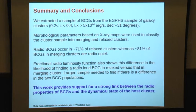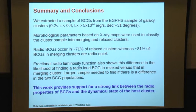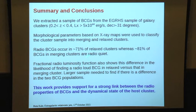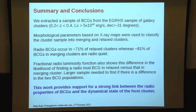To summarize: we extracted a sample of BCGs from the Extended GMRT Radio Halo cluster sample and used morphological parameters on X-ray maps to classify clusters into merging and relaxed. Radio-loud BCGs occur in 75% of relaxed clusters, whereas more than 80% of BCGs in merging clusters are radio quiet. We also constructed the radio luminosity function. The key message is that there is a strong link between the radio properties of the BCG and the dynamical state of the host cluster.